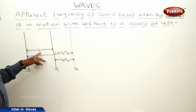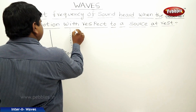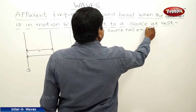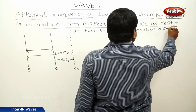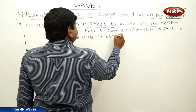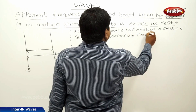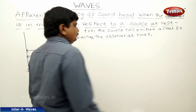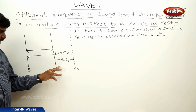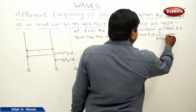When the observer is at position O1 at distance L from the source, the source emits a crest. This crest will reach the observer at time T1. At t = 0, the source emits a crest. Since the observer is moving away, the relative velocity is V plus V0, so T1 = L / (V + V0). This is equation 1.